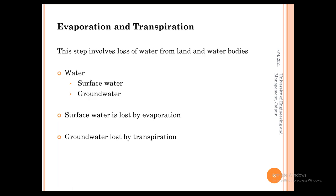The first step is evaporation and transpiration, which generally means the loss of water from land or water bodies. Water on earth is found in two forms — surface water and groundwater. Loss of surface water refers to evaporation, while loss of groundwater refers to transpiration. Nowadays these two terms are combined and also known as evapotranspiration. This is the first step the hydrologic cycle starts with.